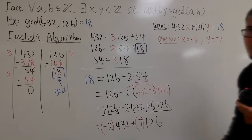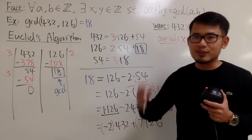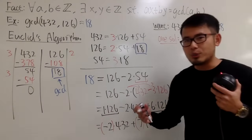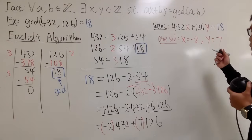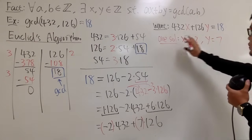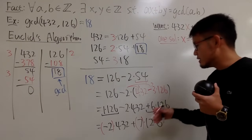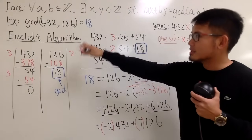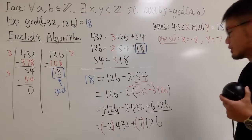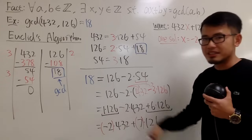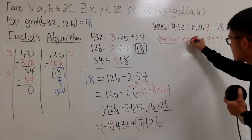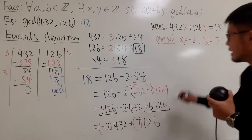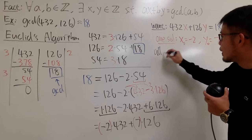If I just end the video, I know many of you will ask: is this the only answer, and how do we find all solutions? So we're not done yet. This is just one answer, found by running the Euclidean algorithm backwards. I'll call these x-naught equals negative 2 and y-naught equals 7 — the initial values. Now let's find all solutions.